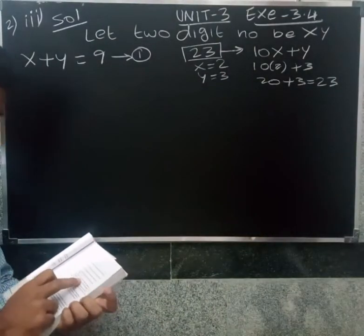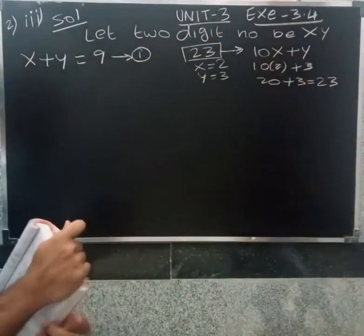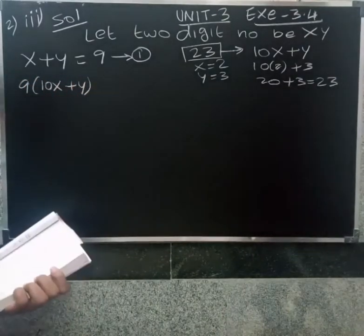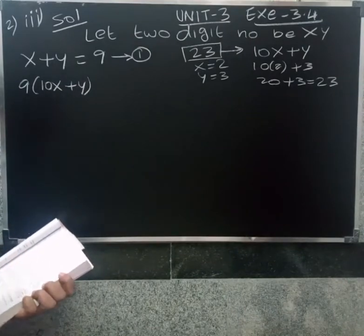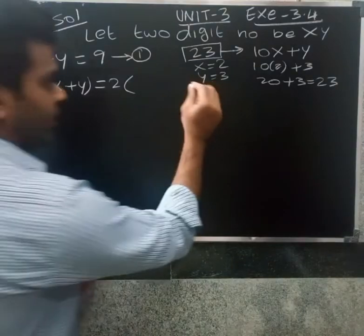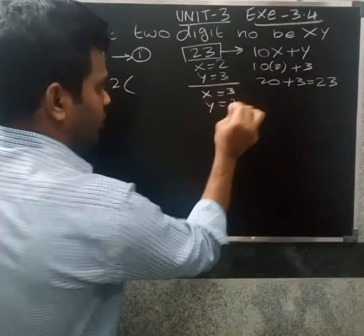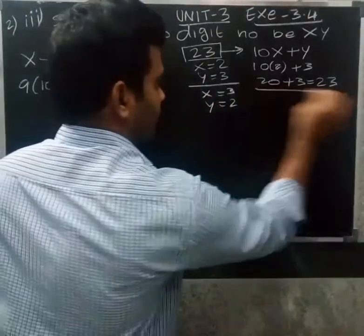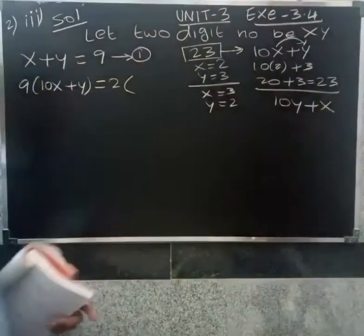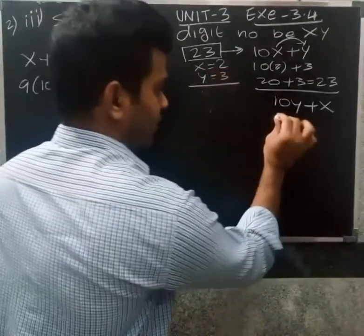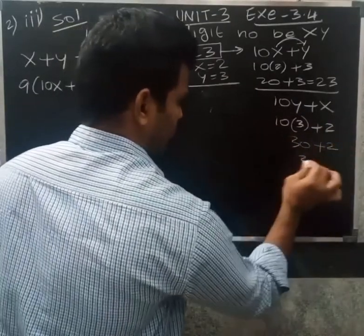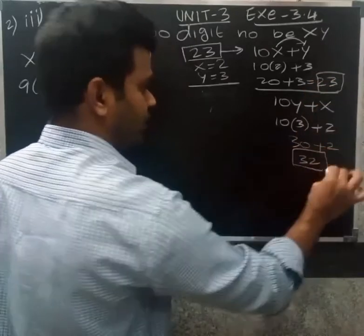Nine times this number equals twice the number obtained by reversing the order of the digits. For example, if x equals 3 and y equals 2, then reversing gives 10y plus x. So, 10y plus x equals 32, which is the reversed number.